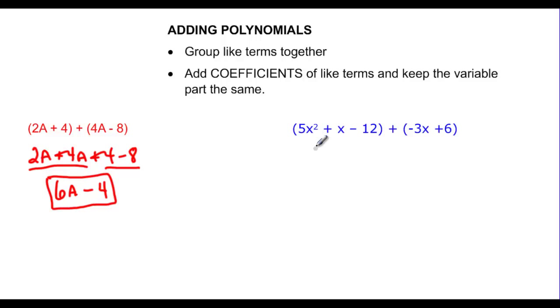In this one, I'm going to combine my like terms if I have them, and I'm going to rewrite my like terms together. 5x squared is the only x squared term, and I'm going to cross these off so I know that I've used them. Here I have an x, and here I have an x over here, so I'm plus x, and then minus 3x, and then I've got my constants, so minus 12 and plus 6.